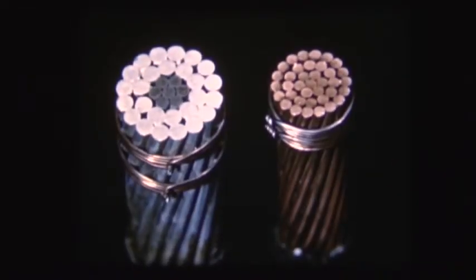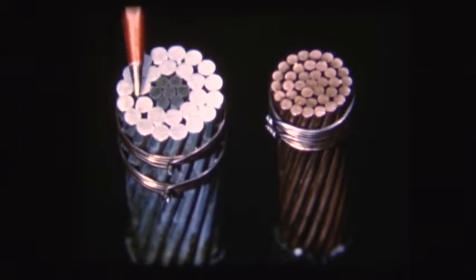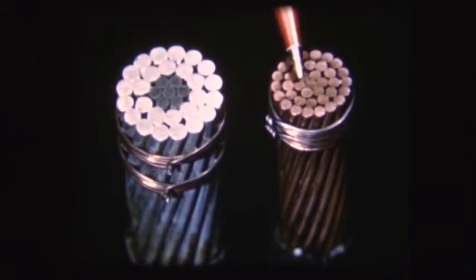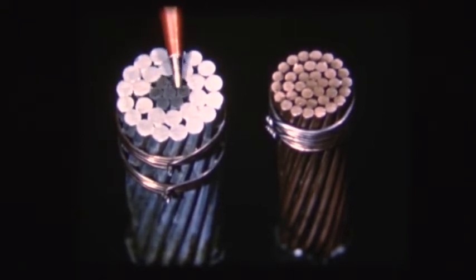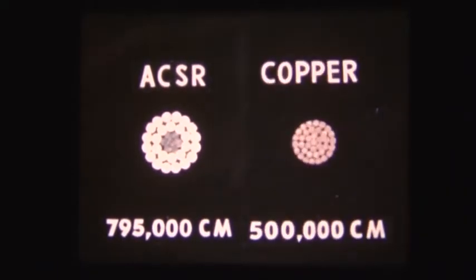Because of aluminum's lower conductivity, somewhat larger sizes must be used than if copper were chosen. And because of its lower tensile strength, a steel core is used in situations where reinforcement would not be necessary for copper. A typical conductor used on Columbia River System 230,000 volt lines is ACSR, Aluminum Conductor Steel Reinforced, with 795,000 circular mils of aluminum. This material has a copper equivalent of 500,000 circular mils. That is, its carrying capacity is equal to an unreinforced stranded copper conductor of 500,000 circular mils.